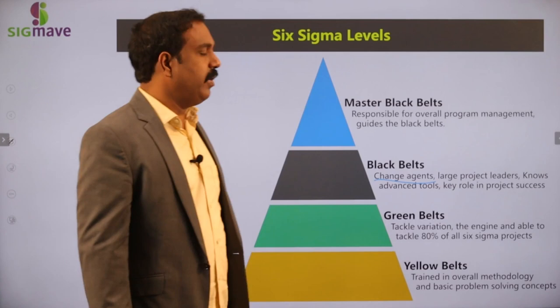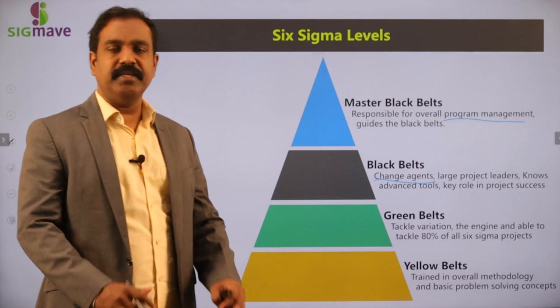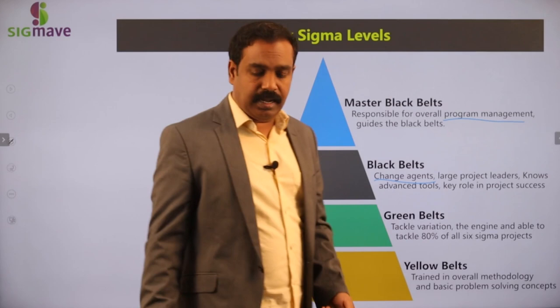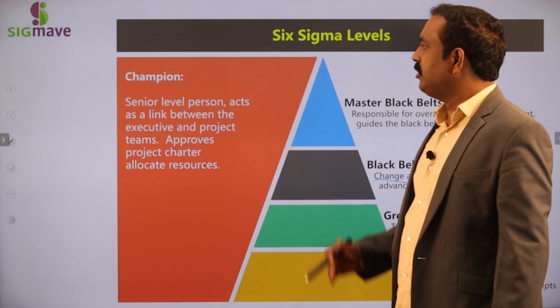Next is master black belt. He is responsible for overall program management. When we say program, it is nothing but a combination of many projects. He guides the black belts and is very expert in advanced statistical tools. He also guides another person called the project champion.